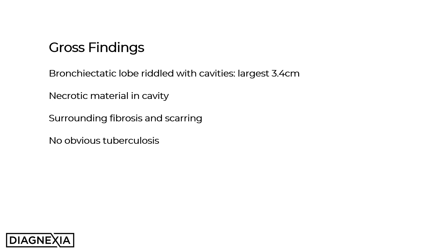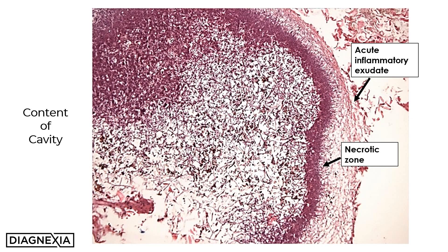Within the cavities, necrotic material was identified. The surrounding lung parenchyma displayed fibrosis and scarring, and there was no obvious active tuberculosis noted. This is a low-power magnification of the contents of one of the cavities. You can see that the outer rind is formed by acute inflammatory exudate.